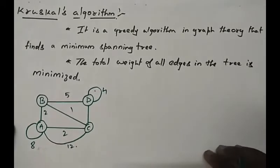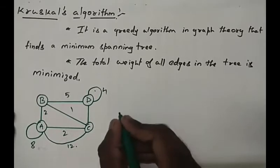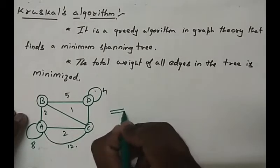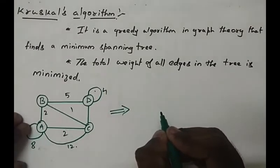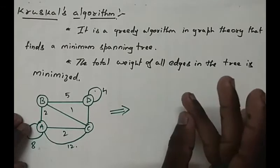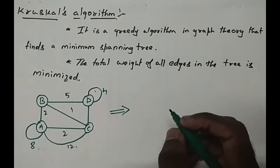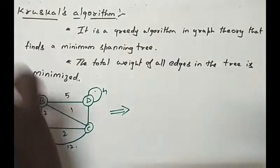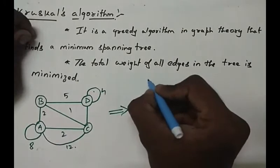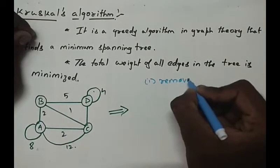So let us consider the given example. It is a graph. Now if we convert this to a minimum spanning tree, we get, for a minimum spanning tree you should have two procedures which should remove loops.